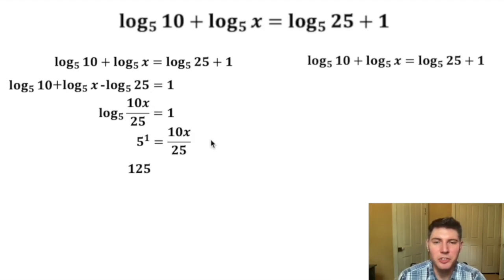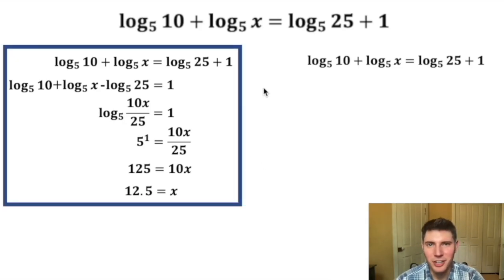5 times 25 is 125, and that's equal to 10x. To get the x alone, we divide both sides by 10, and we get 12.5 equals x. So this is a solid way to solve this logarithmic equation.